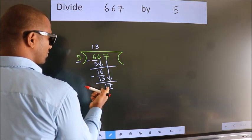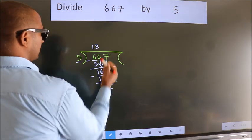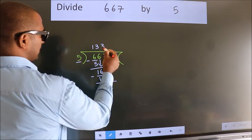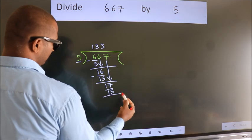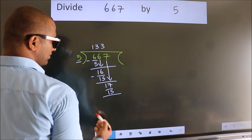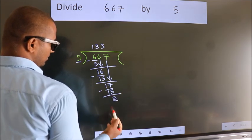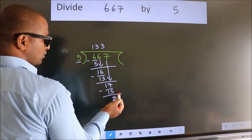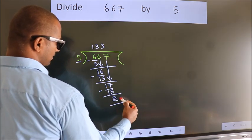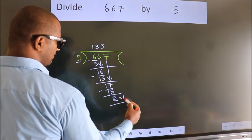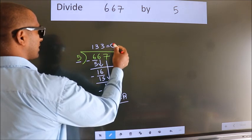A number close to 17 in the 5 times table is 5 threes 15. Now we subtract. We get 2. No more numbers to bring down, so we stop here. This is our remainder. This is our quotient.